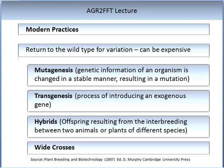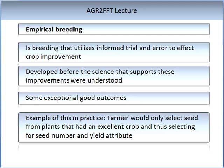I'd like to differentiate between empirical breeding and scientific breeding. Empirical breeding is a form of breeding that utilises informed trial and error to effect crop improvement, developed before the science that supports these improvements was understood. There are some exceptionally good outcomes for this kind of breeding. For example, a farmer would only select seed from the best plants that had an excellent crop, thus selecting for seed number and yield attributes. It used to be common practice that a farmer would keep a component of his seed every year and plant a small section of the field with this seed, thus obtaining new and sustaining old variation in the crop.